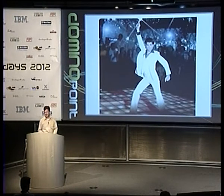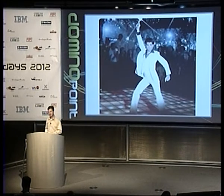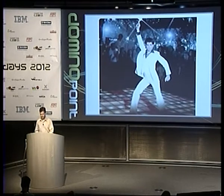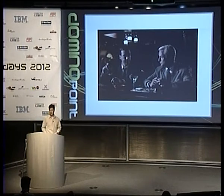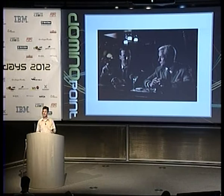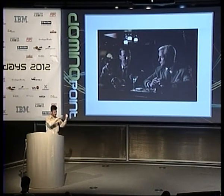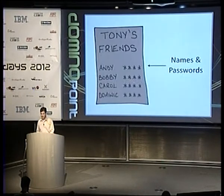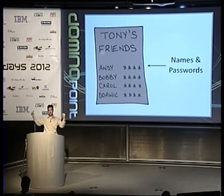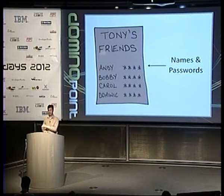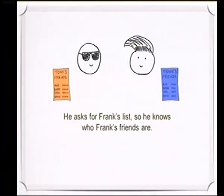Tony has a disco. He has a list of people allowed to come in — when someone comes to the door, he checks his list and says yes, you're on my list, you can come in. Frank has a bar — a very cool bar — and Frank also has a list. If you want to go into Frank's bar, Frank checks his list and says, I know who you are, you can come in. Frank and Tony got together, and Tony said: I want the people who come to your bar to also come to my disco. But Frank said no — it's my list, you can't have it.